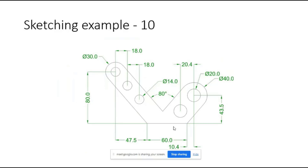The last example we have looks simple but we need to take care to give proper constraints. We have to draw this shape where between these two lines there is a specific angle, and this distance should be given properly, otherwise you cannot get the exact shape and dimension. First, let's try to make the horizontal base of 60mm and place one corner on the origin.